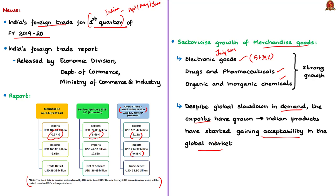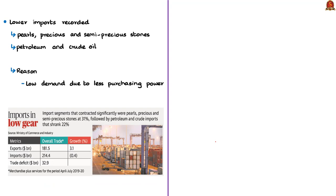Despite an expected global slowdown in demand, growth in exports of these products shows that India's products have started gaining acceptability in the global market. The news article also tells that imports of July 2019 were 10.28% lower in rupee terms compared to July 2018. Imports of pearls, precious and semi-precious stones declined, and imports of petroleum and crude oil reduced. One reason for the decrease in imports is low demand, since many people lack the purchasing power to buy a particular merchandise good.